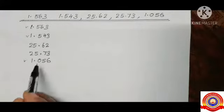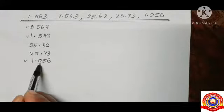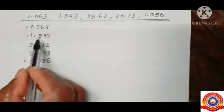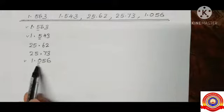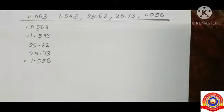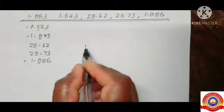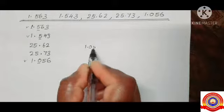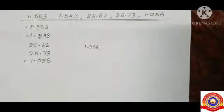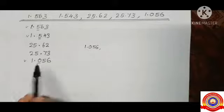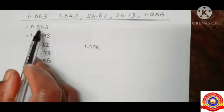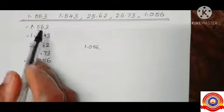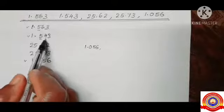Looking at the tenths place of the numbers with whole part 1: the tenths digits are 0, 5, and 5. So which one is the smallest? It is 0 — that is, 1.056 is the smallest among these numbers. From 1.563 and 1.543, the smallest number is 1.543.